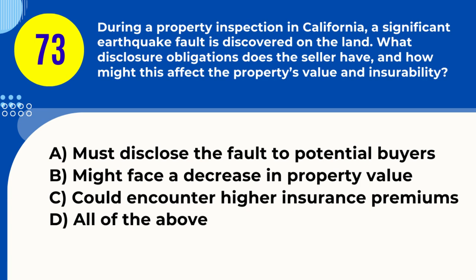Question 73. During a property inspection in California, a significant earthquake fault is discovered on the land. What disclosure obligations does the seller have, and how might this affect the property's value and insurability? A. Must disclose the fault to potential buyers B. Might face a decrease in property value C. Could encounter higher insurance premiums D. All of the above. Answer: D. All of the above. Explanation: Discovering an earthquake fault requires disclosure, may decrease value, and could lead to higher insurance costs.